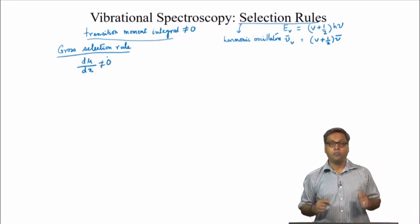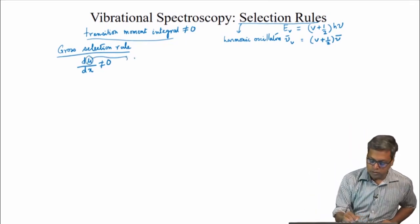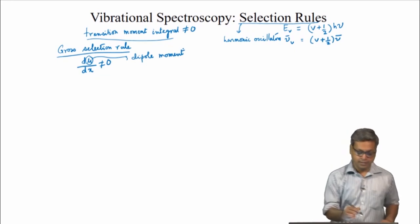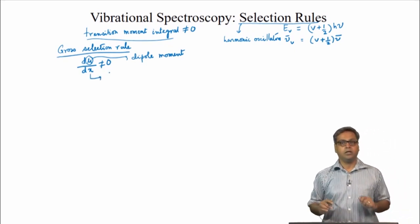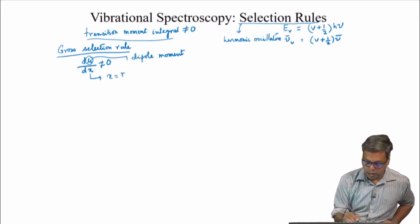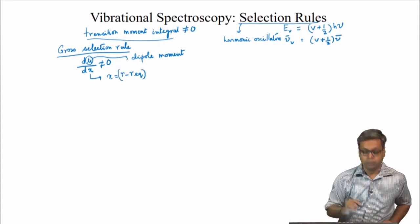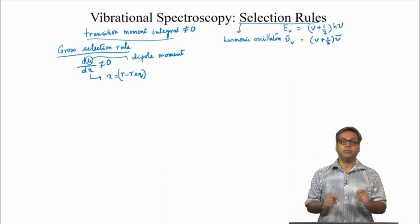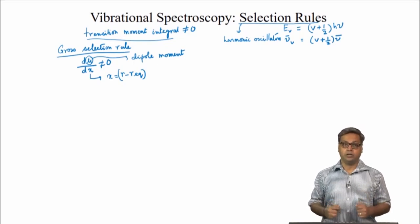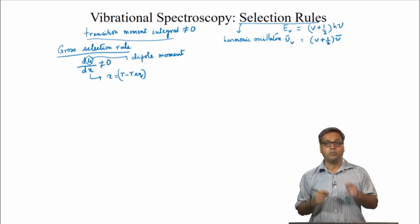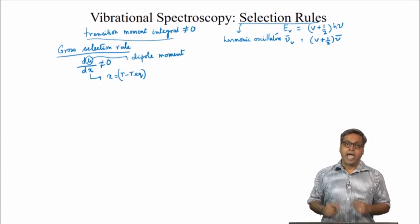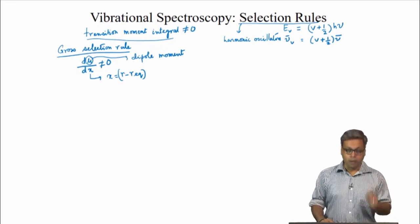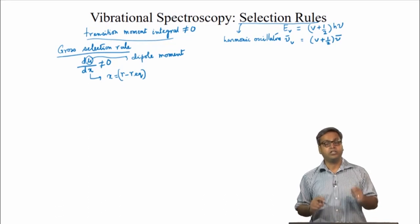Here μ is the dipole moment, and x is the displacement from the equilibrium position, that is x equals r minus r_equilibrium. This means that the dipole must change with displacement at the equilibrium position. As the vibration goes through the equilibrium position, the dipole moment of the molecule must be changing. But this does not mean that the molecule has to have a permanent dipole moment, as we saw in the case of rotational spectroscopy.